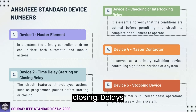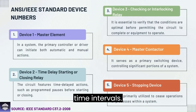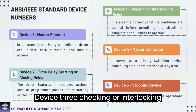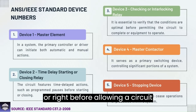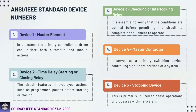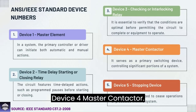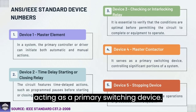Device 3: Checking or interlocking relay — ensures conditions are right before allowing a circuit to complete or equipment to operate. Device 4: Master contactor — controls large sections of a system, acting as a primary switching device. Device 5: Stopping device — primarily used to halt operations or processes in the system.